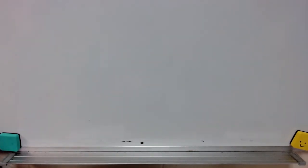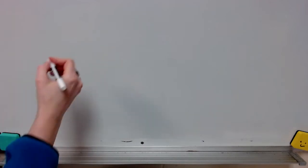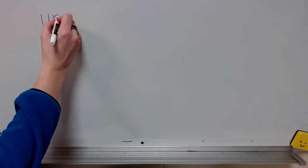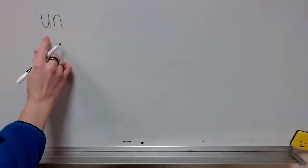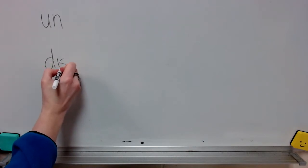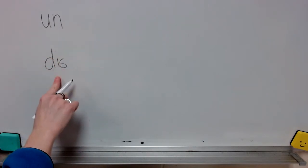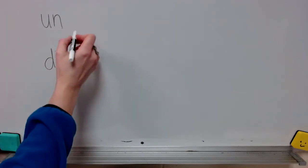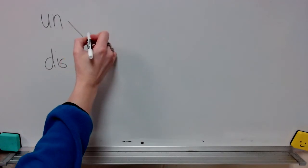Let's talk about two prefixes today. Remember, a prefix is a word part that is added to the beginning of a word that changes the word's meaning. These are the two prefixes we're going to discuss today: un and dis. Both of these mean not.